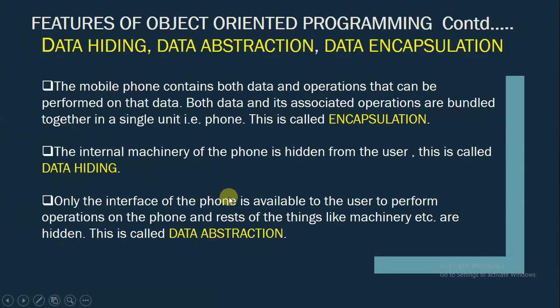The interface of the phone is available to the user to perform operations on the phone, like calling, messaging, surfing, and more features, while the rest of the things like machinery etc. are hidden. And this is called data abstraction.